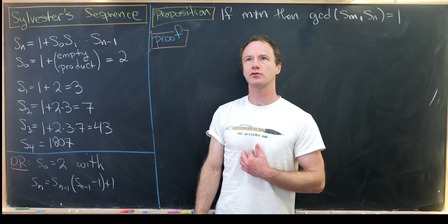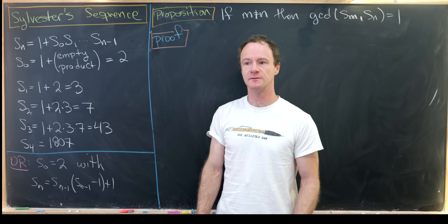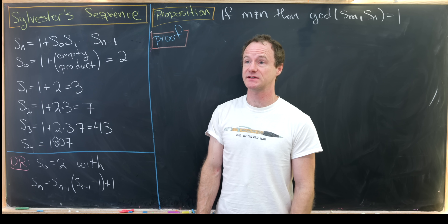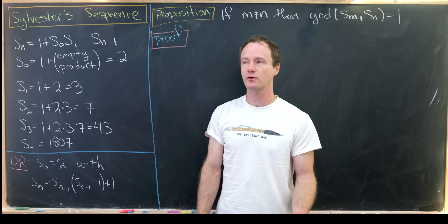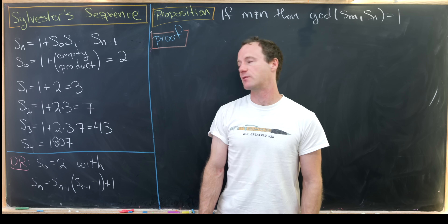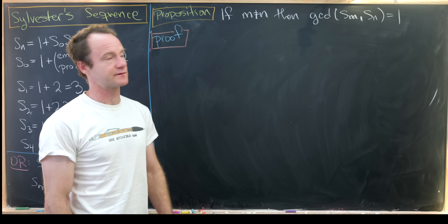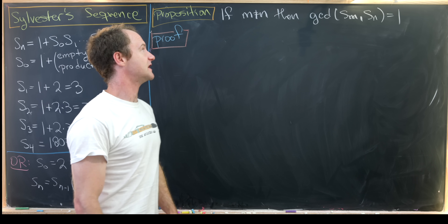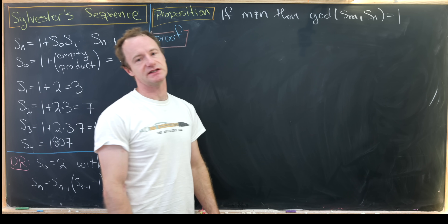We're going to prove two nice facts involving Sylvester's sequence. One is about the relative primeness of distinct terms from the sequence, and the other will be finding a closed form for the sum of the reciprocals of this sequence. Let's look at the relative primeness result first. The proposition is: if m is not equal to n, then the GCD of S_m and S_n is equal to one.